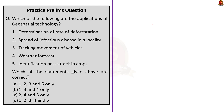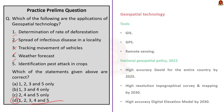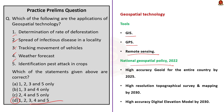All the given statements are applications of geospatial technology. Unfortunately most of its applications have not gained much popularity. We just use Google Maps and that's all most of us know about geospatial technology. The tools used in geospatial technology are GIS (Geographical Information System), GPS (Global Positioning System), and Remote Sensing. The National Geospatial Policy 2022 includes visions such as high-accuracy geoid for the entire country by 2025, high-resolution topography survey and mapping by 2030, and high-accuracy digital elevation model by 2030.